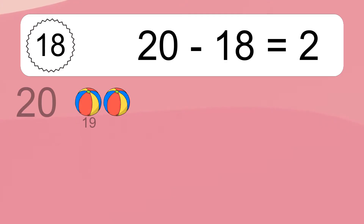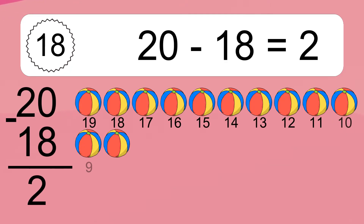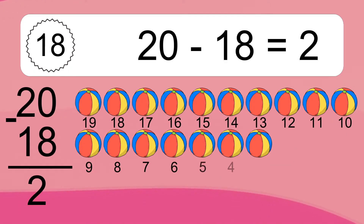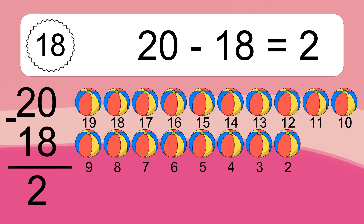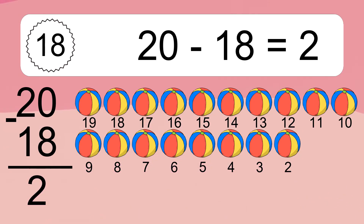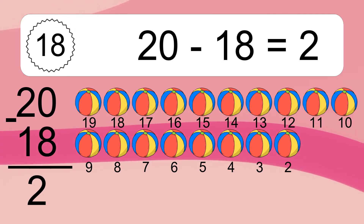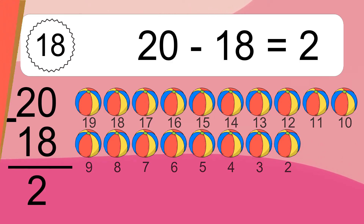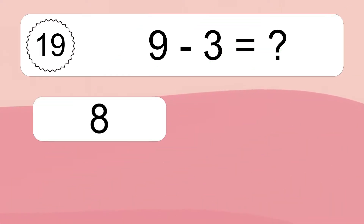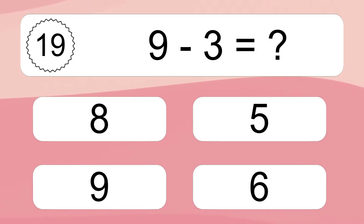20 minus 18 equals 2. Let's count it. 19, 18, 17, 16, 15, 14, 13, 12, 11, 10, 9, 8, 7, 6, 5, 4, 3, 2. 9 minus 3 equals what?